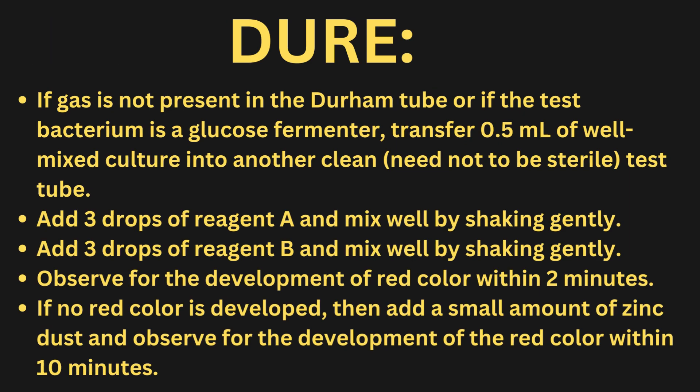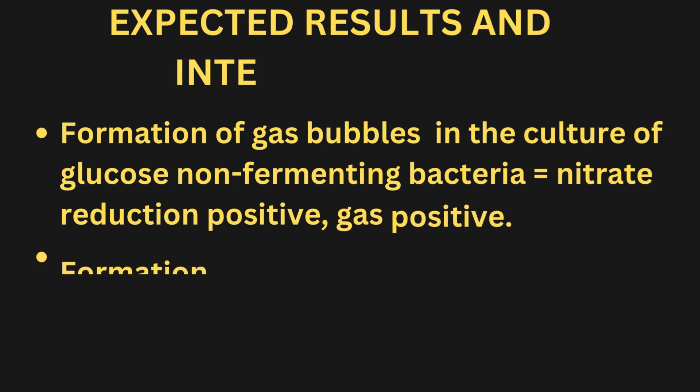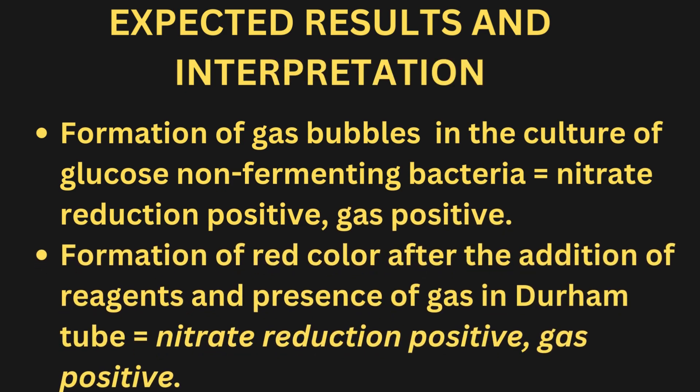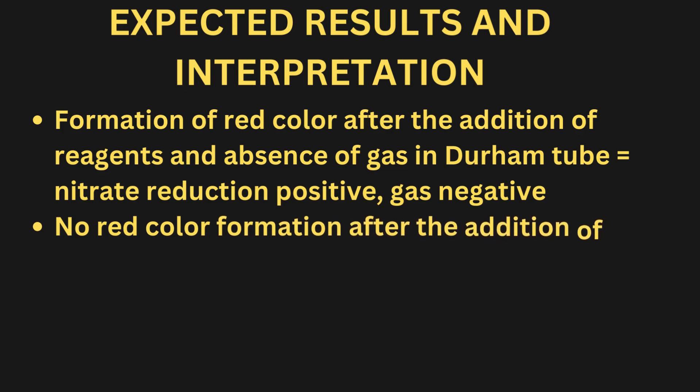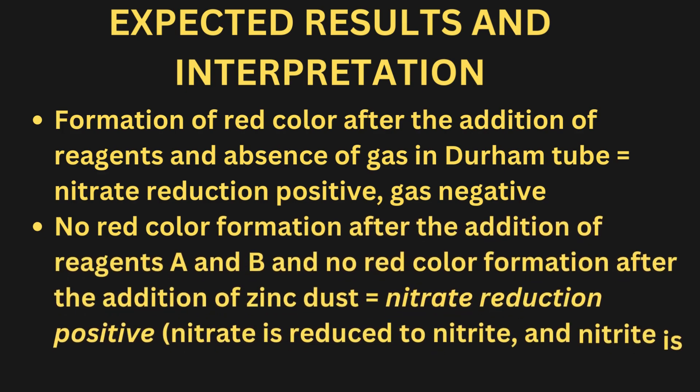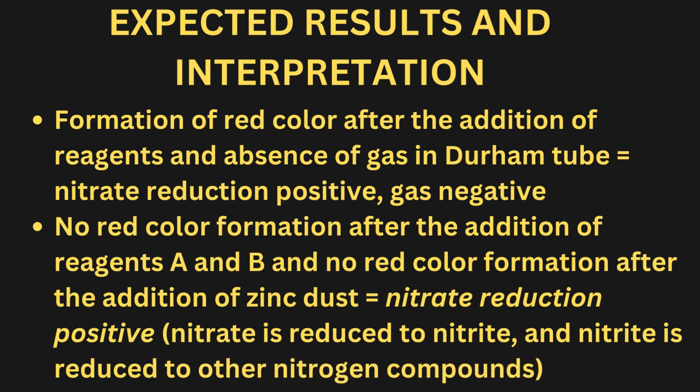Expected results and interpretation: Formation of gas bubbles in the culture of glucose non-fermenting bacteria indicates nitrate reduction positive, gas positive. Formation of red color after the addition of reagents, with presence of gas in the Durham tube, indicates nitrate reduction positive, gas positive. No red color formation after the addition of reagents A and B, and no red color formation after the addition of zinc dust, indicates nitrate reduction positive — nitrate is reduced to nitrite and nitrite is further reduced to other nitrogen compounds.